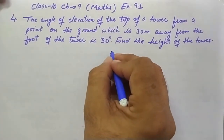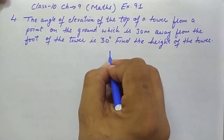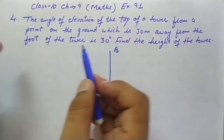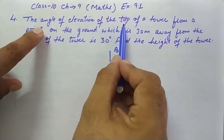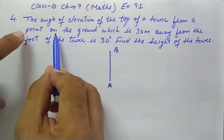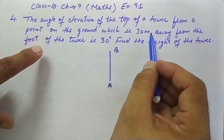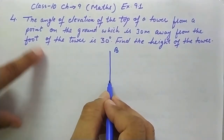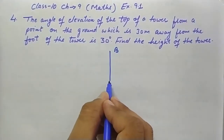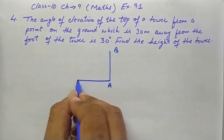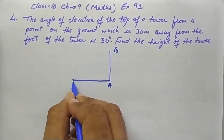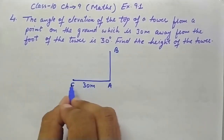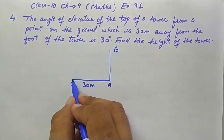Let's draw the tower. Suppose AB is the tower. The angle of elevation is observed from a point on the ground which is 30 meters away from the foot of the tower. Our point of observation is C, and AC is 30 meters.